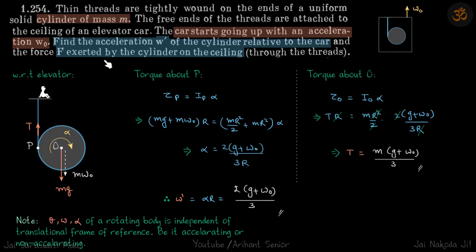Now force exerted by the cylinder on the ceiling. We can do it by either force method where we write Mg plus M W naught minus T is equal to MA and then get the value of T. But let's do it in another way because if we calculate the torque about point O, we don't need these two forces at all, so it's going to simplify our situation quite considerably.